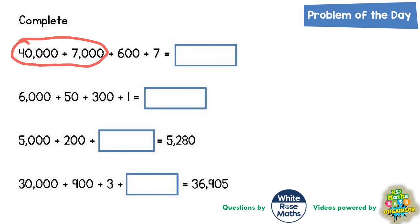40,000 plus 7,000 is 47,000. Then if you add 600 plus 7, that's 607. Now you can put these two answers together: 47,000 plus 607 equals 47,607. You have a comma three digits from the end: one, two, three, comma.